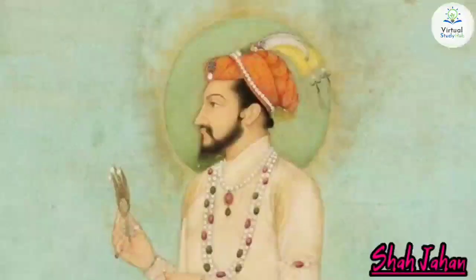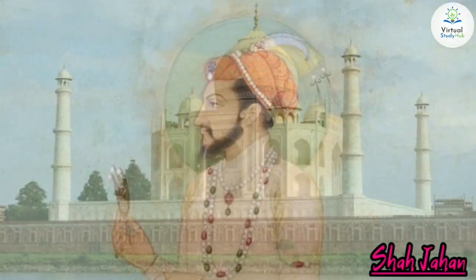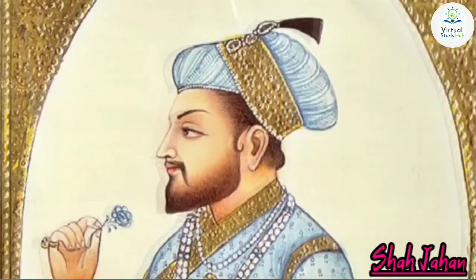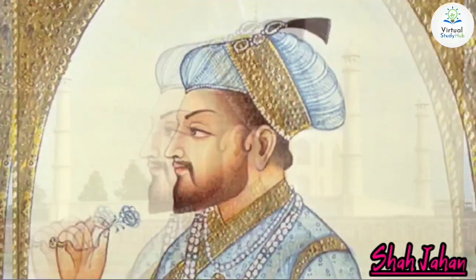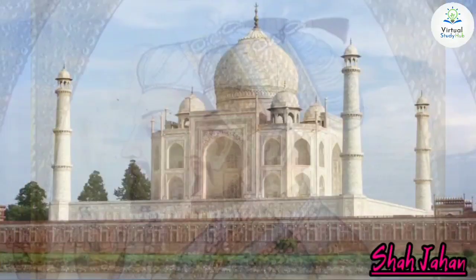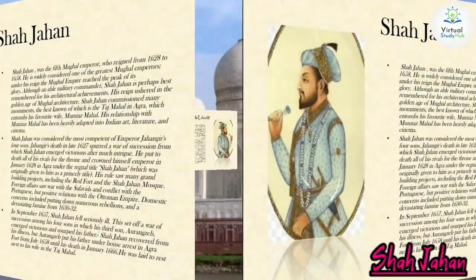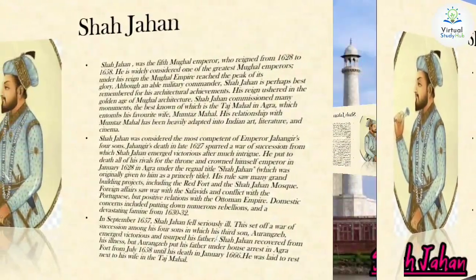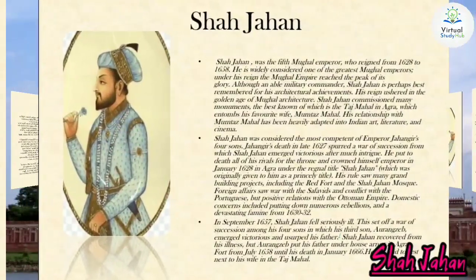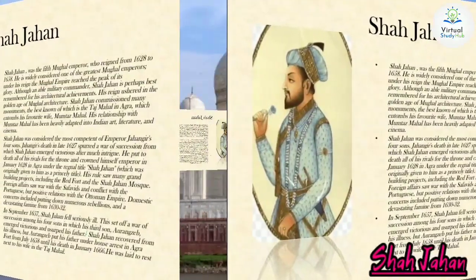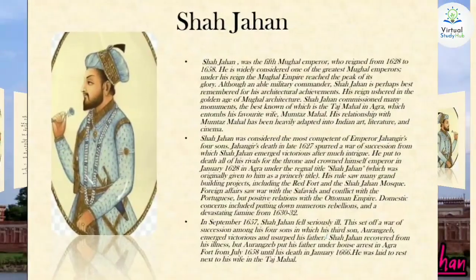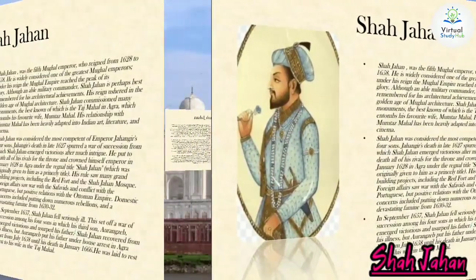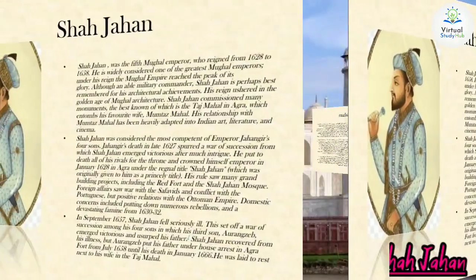Now let's get to know the person who commissioned it — Shah Jahan, the fifth Mughal emperor who reigned from 1628 to 1658. Widely considered one of the greatest Mughal emperors, under his reign the Mughal Empire reached its peak of glory. Although an able military commander, he is perhaps best remembered for his architectural achievements. His reign ushered in a golden age of Mughal architecture, and he commissioned many monuments, the best known of which is the Taj Mahal in Agra.